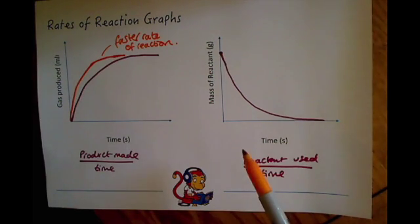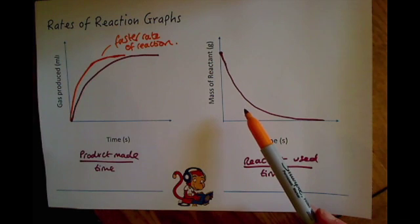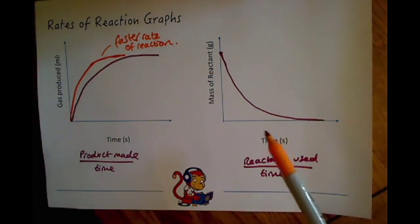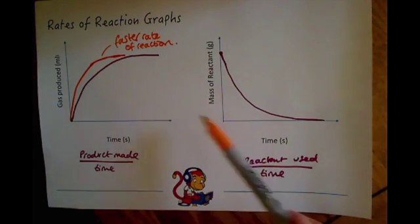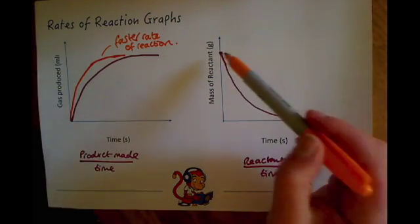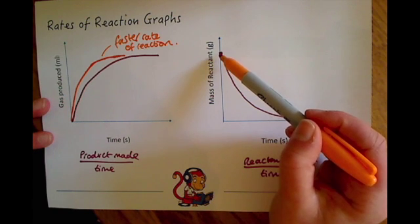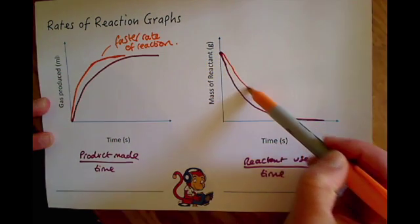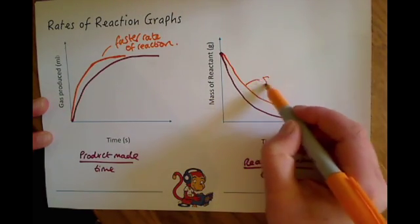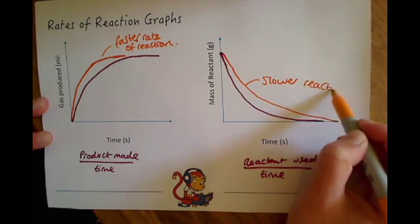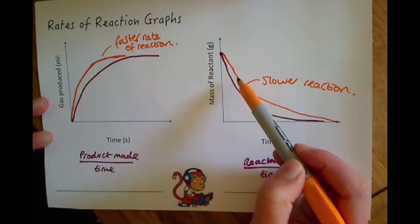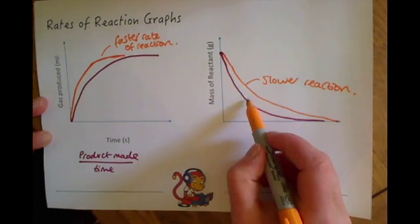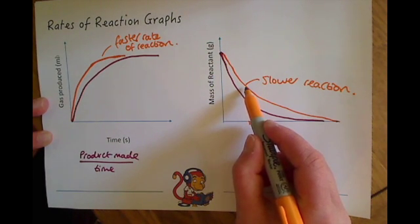Similarly, on the second graph, if you're asked to draw a slower rate of reaction, think about where you'd draw the line. In a slower rate of reaction you're going to have less mass lost of the reactant over time, so the line will be above the original — less mass of reactant is lost. At a given time point, the pink line has a lot of mass lost whereas the orange line doesn't have as much, so it's a slower reaction.